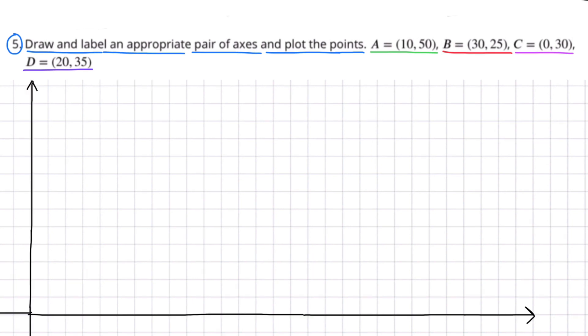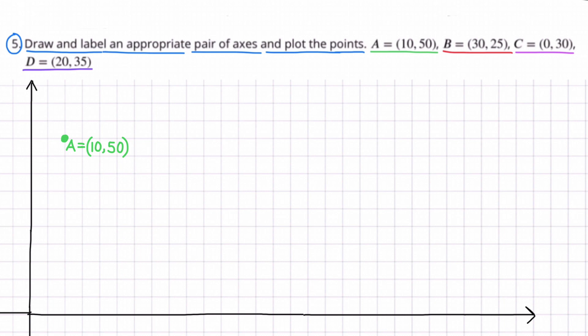I put the origin in the lower left-hand corner so I'd have enough room. In green I labeled A. Starting at the origin, I'm going to move two spaces to the right — counting by fives, that equals 10 units. After moving to the right, I need to move up 50 units, counting by five until I get to 50. That's where I plot the point.